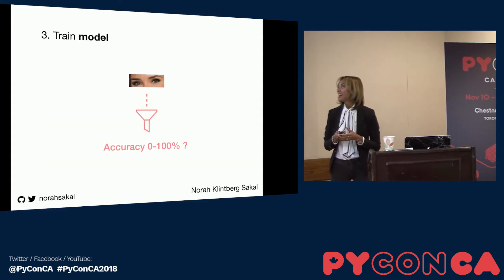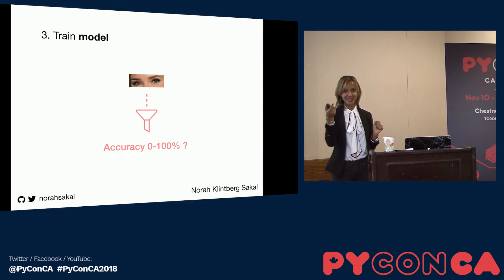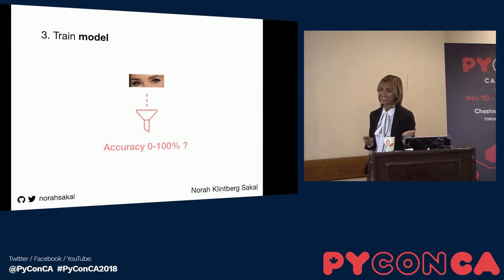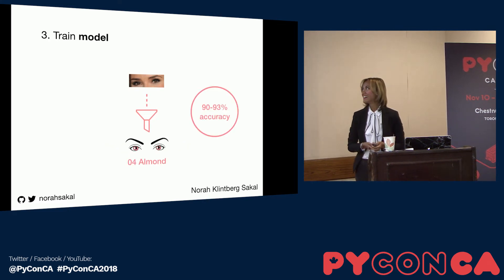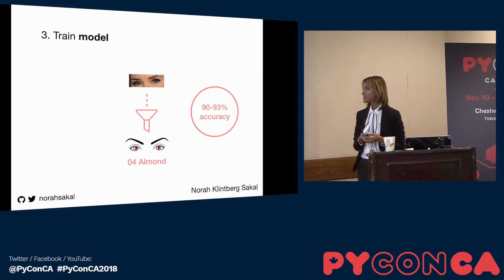Okay, so back to the problem: what accuracy do you think my network performed? Without any optimization, it performed between 90 and 93 percent. So it's fairly good at understanding what kind of eye shape it's looking at. In this case, it was almond eyes.